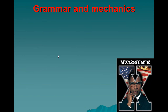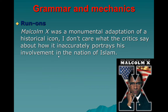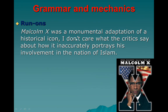For grammar mechanics, I'll briefly cover two main mistakes I see students make. One is run-ons, often called comma splices. For example: 'Malcolm X was a monumental adaptation of a historical icon, I don't care what the critics say about how it inaccurately portrays his involvement in the Nation of Islam.' The problem here is that these are two complete sentences joined by a comma. Commas don't link two sentences together. A semicolon does, or you can simply use a period.